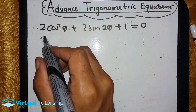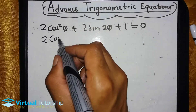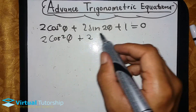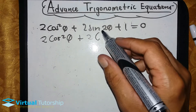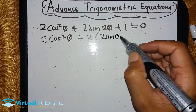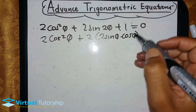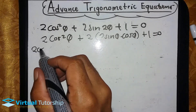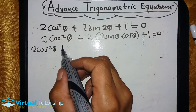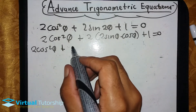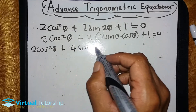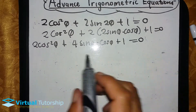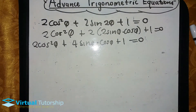Before we solve the equation, we are going to use double angles to simplify. So it's going to be: 2cos²θ plus, and then this double angle 2sinθ expands to 2sinθcosθ, plus 1 equals zero. So it becomes 2cos²θ plus 4sinθcosθ plus 1 equals zero.